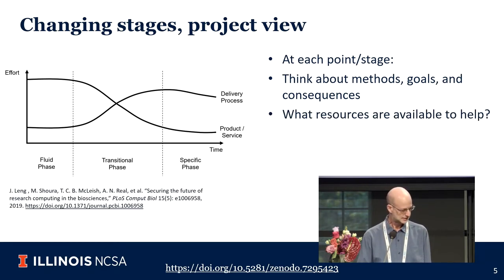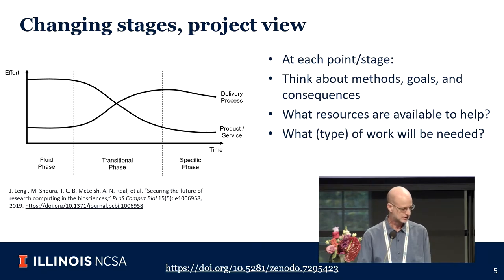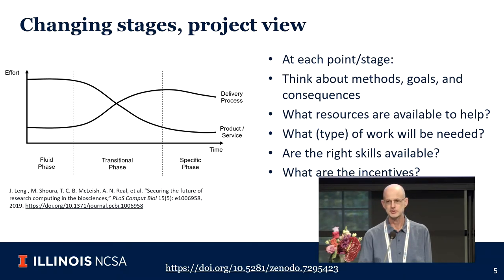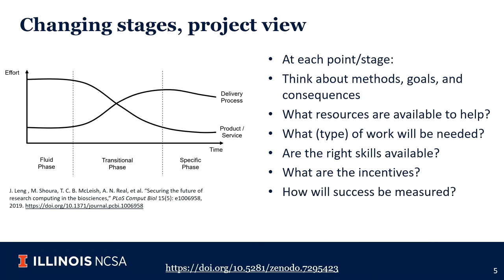Making this transition requires a series of different choices. You have to think about methods, goals, and consequences. What resources are available — are you in the Netherlands with the eScience Center to help, or somewhere else? What kind of work is needed, do you have the skills, do you have professional staff? What are the incentives — will your community appreciate this, can you give a conference talk about it? How is success going to be measured? And finally, will your institution support this for promotion or when asking for resources?